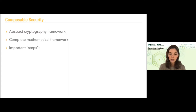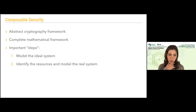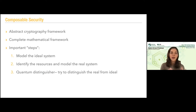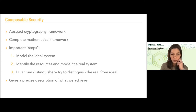I'm not going to explain everything; I'm going to present some important steps. The first thing we will need to do is model the ideal system — what do we want in the ideal case when we're talking about distribution of a key. The second thing is to identify the resources we have when we construct our real protocol and model the real system using them.